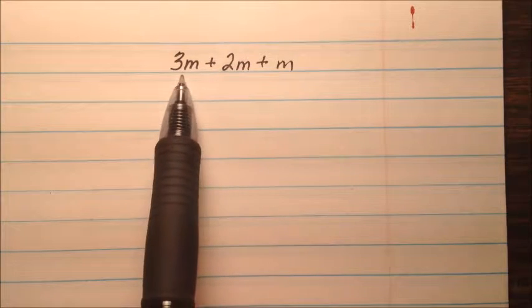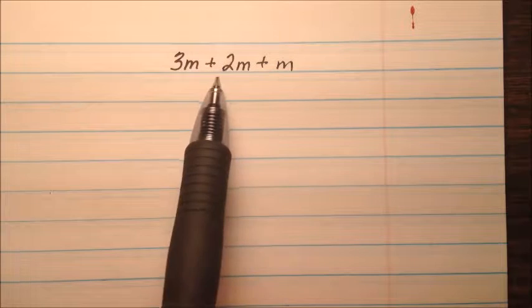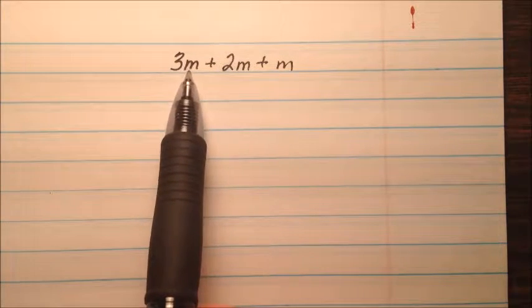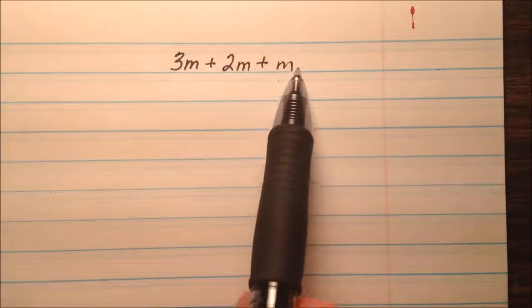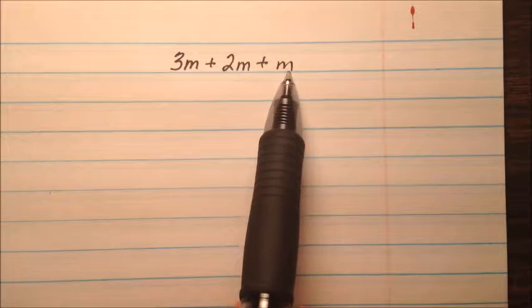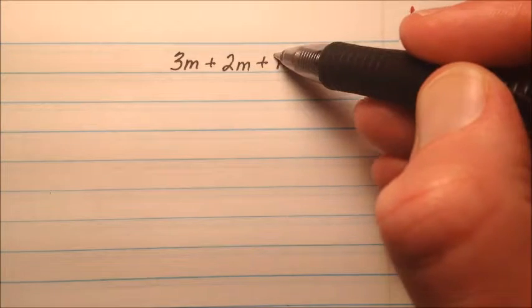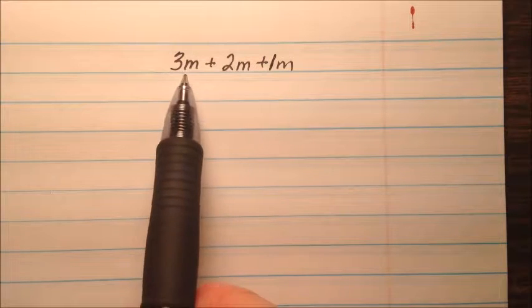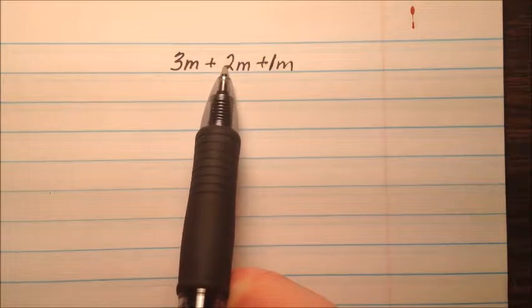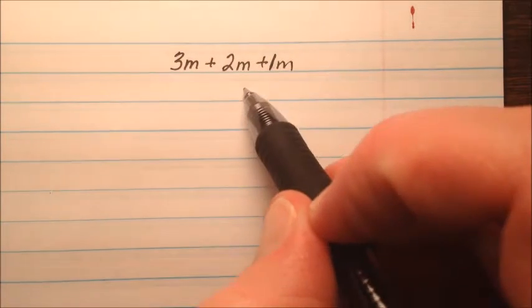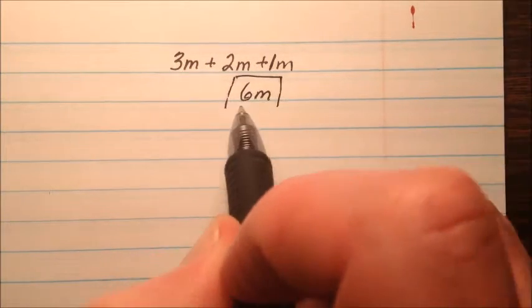In this next example we have 3m plus 2m plus m. The coefficient on this first one is 3, then I have 2m's. But how many m's do I have here? It just says plus m. If there is no coefficient in front of your term, it's understood to be 1. So we have 3m's plus 2m's - three plus two is five - plus one more m is six. So it's 6m, because these are just objects we're adding.